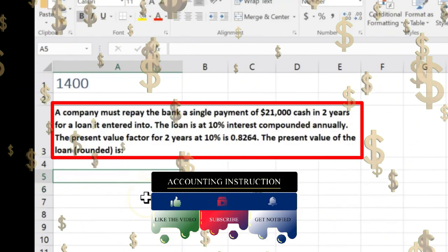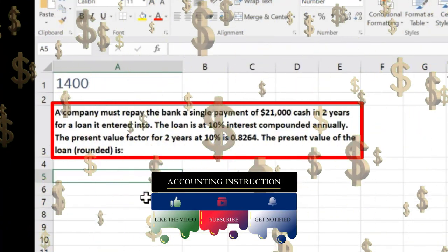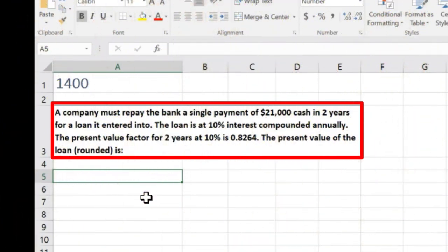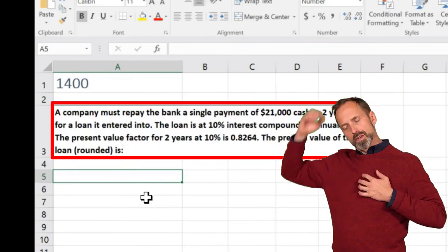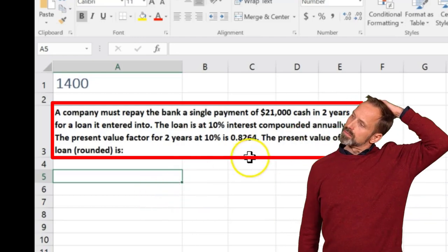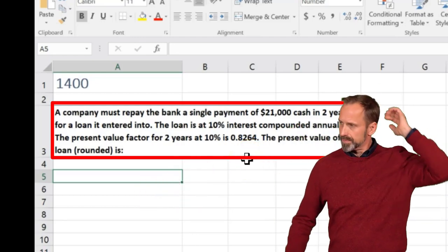the loan that we're going to pay back. What would be the present value basically after two years considering a 10% interest rate? Now the easiest way to do this would be to look at a table in order to find the present value factor, which they gave us, so we don't need the table right now.